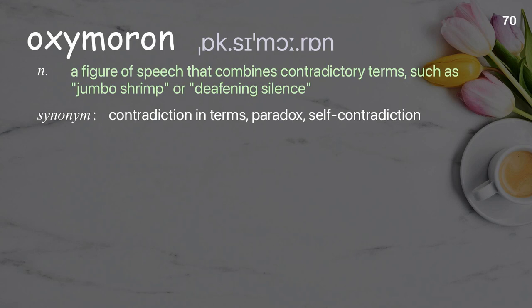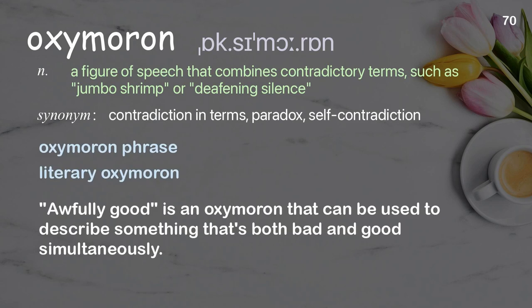Oxymoron: A figure of speech that combines contradictory terms, such as jumbo shrimp or deafening silence. Examples: oxymoron phrase, literary oxymoron. "Awfully good" is an oxymoron that can be used to describe something that's both bad and good simultaneously.